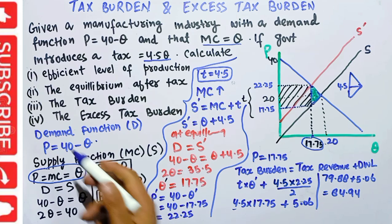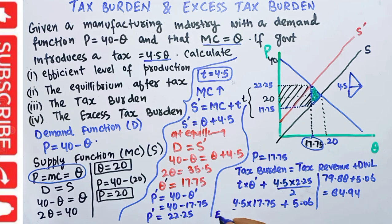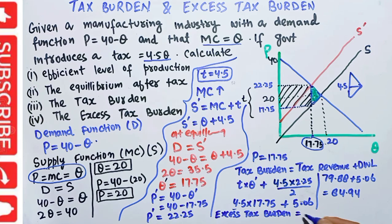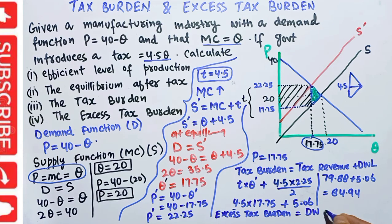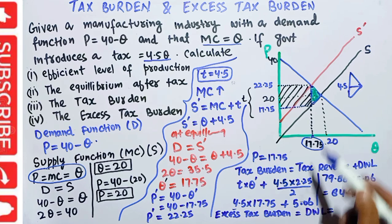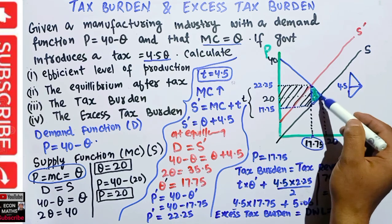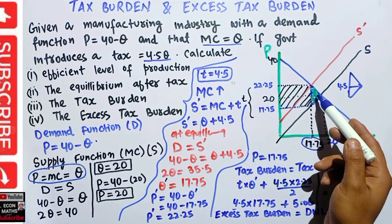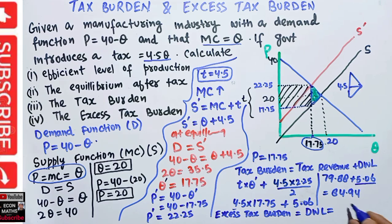The fourth part asks for the excess burden of tax. The excess burden of tax is simply equal to the deadweight loss. We calculated the deadweight loss as 5.06. So the excess tax burden is 5.06. I hope I made myself clear in this video, thank you.